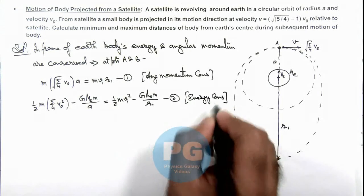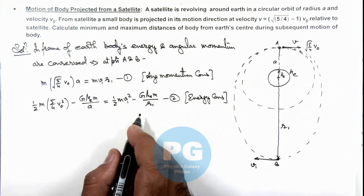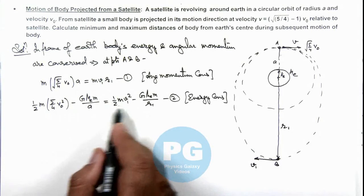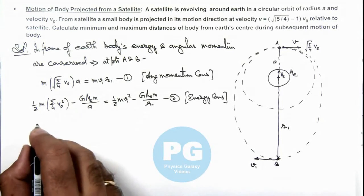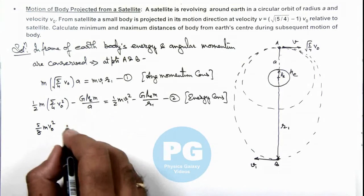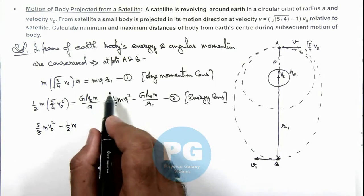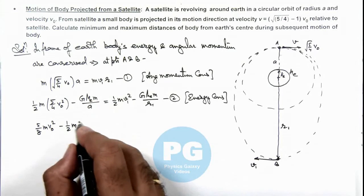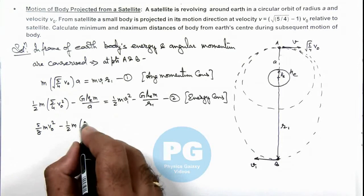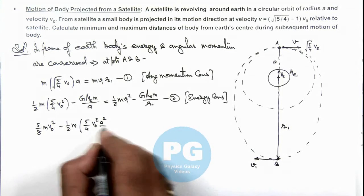Now we simplify this relation. From Equation 1 we substitute the value of v₁. Moving ½mv₁² to the left side, we substitute v₁ = √(5/4) · v₀ · a / r₁, so v₁² = (5/4) · v₀² · a² / r₁². The first term gives (5/8)mv₀², and after substitution we have: (5/8)mv₀²[1 − a²/r₁²].